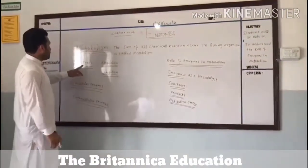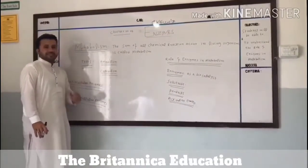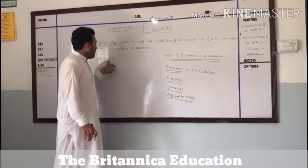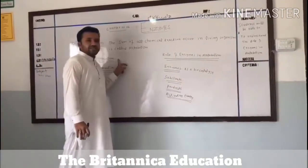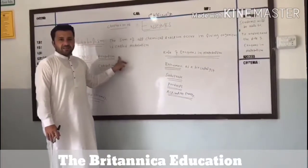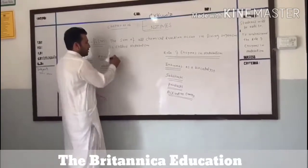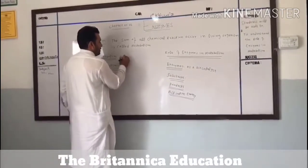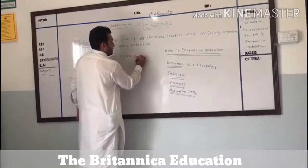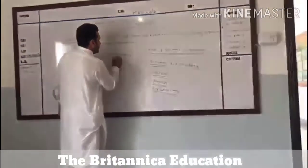Metabolism has two types: one is anabolism and the other is catabolism. In anabolism, large molecules are synthesized from simple molecules. Examples of anabolism include photosynthesis and assimilation.